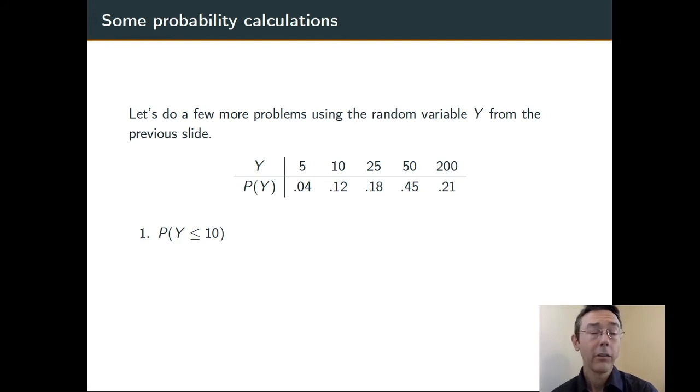So if Y is less than or equal to 10, that means Y is either 5 or 10. So the probability that Y is less than or equal to 10 is going to be the probability that Y is 5 plus the probability that Y is 10. So 0.04 plus 0.12 or 0.16.